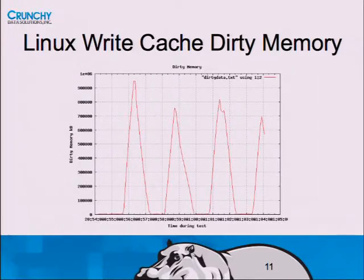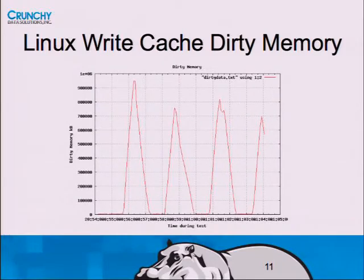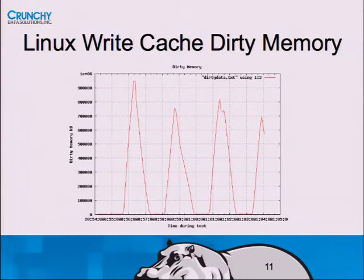The checkpoint spread out over time - when you see dirty memory climb, that's the checkpoint writing to the OS cache. The high water mark here is almost hitting a gigabyte of dirty memory. Basically at the point when the checkpoint is over, we've got a 1.5 gigabyte database and an entire gigabyte of it has been updated by PG bench and dumped out as part of the checkpoint. Then it switches over to fsync calls to get it forced to disk.